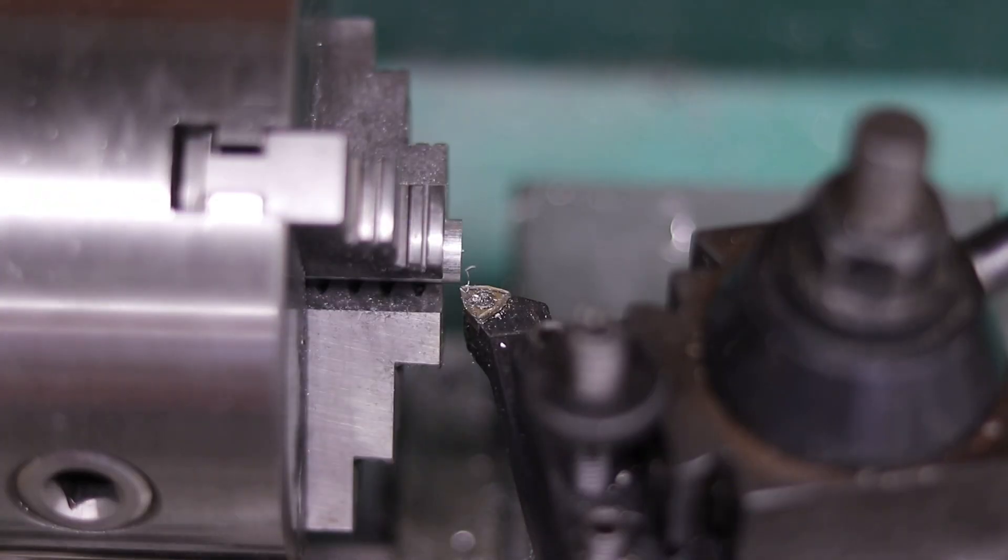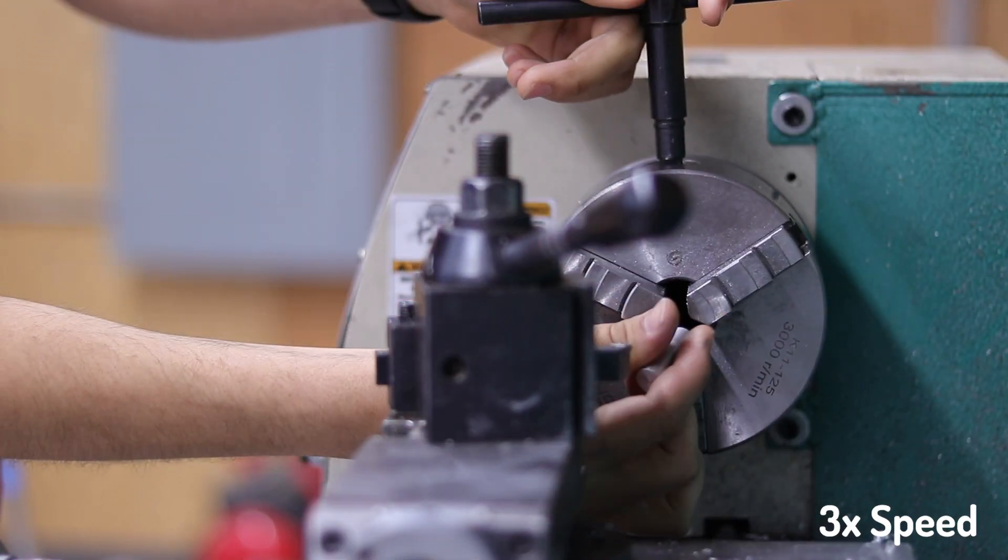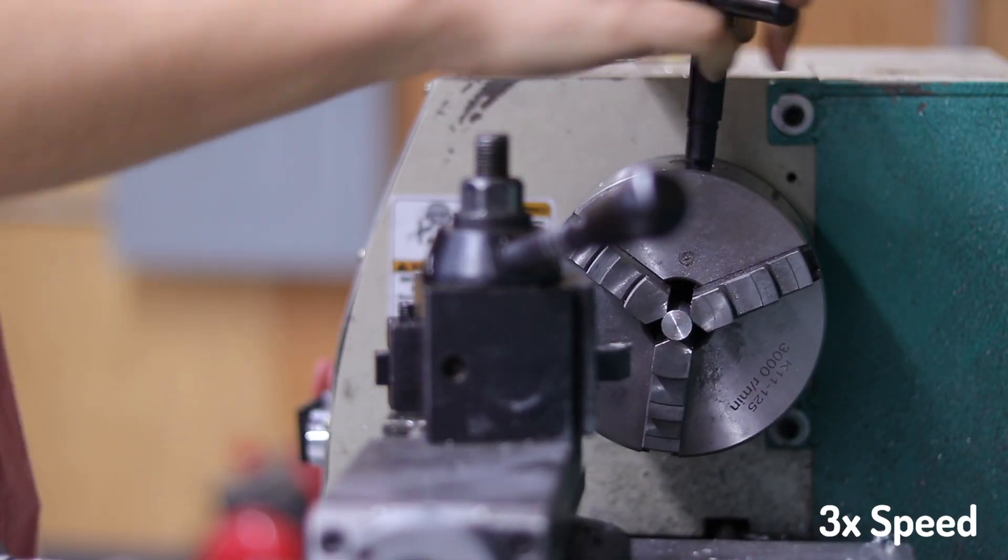Once the chuck has completely stopped spinning, I'll use the chuck key to take out the standoff, flip it, and repeat the same thing on the opposite side.